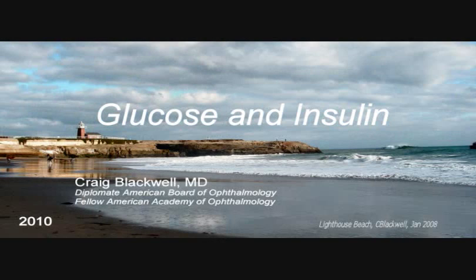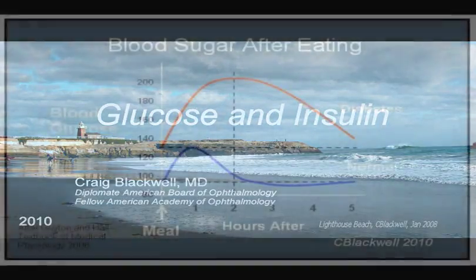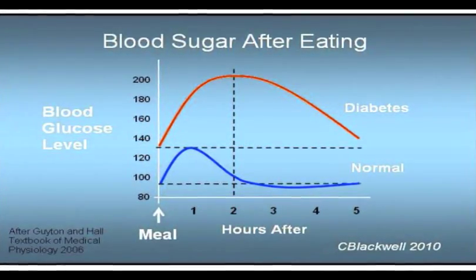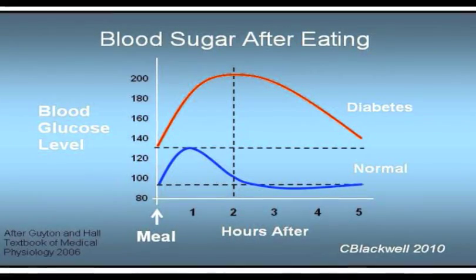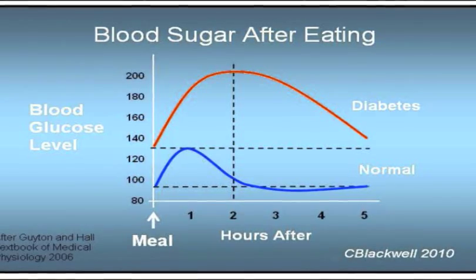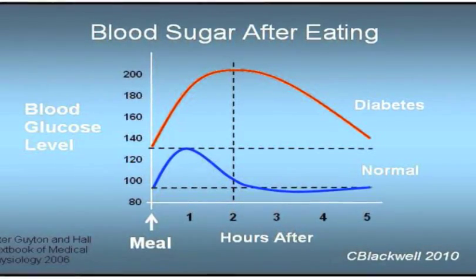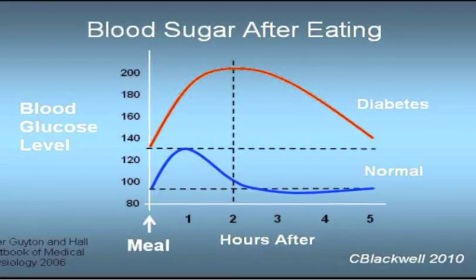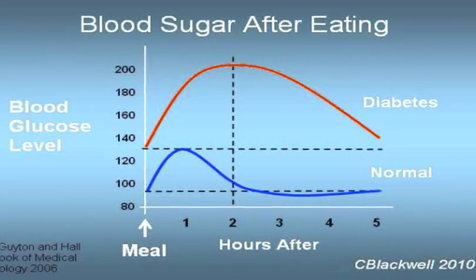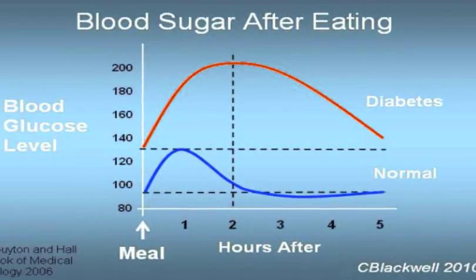This video is part one of a series of videos laying the foundation to understand diabetes and its effect on the eye. This is a graph of blood glucose after a meal. The blue line shows normal behavior. The orange line shows how different blood glucose behaves in someone with diabetes. In this video we will discuss how the body normally handles glucose, and in the next video, what happens in diabetes.